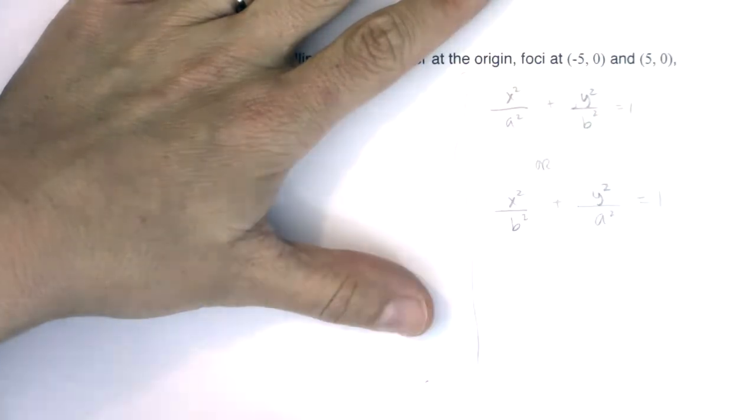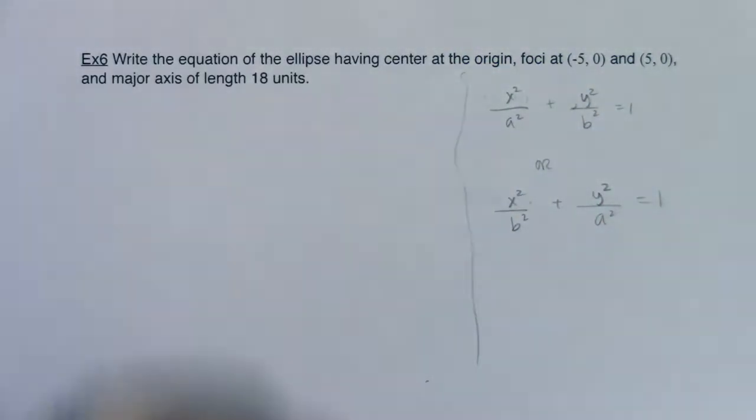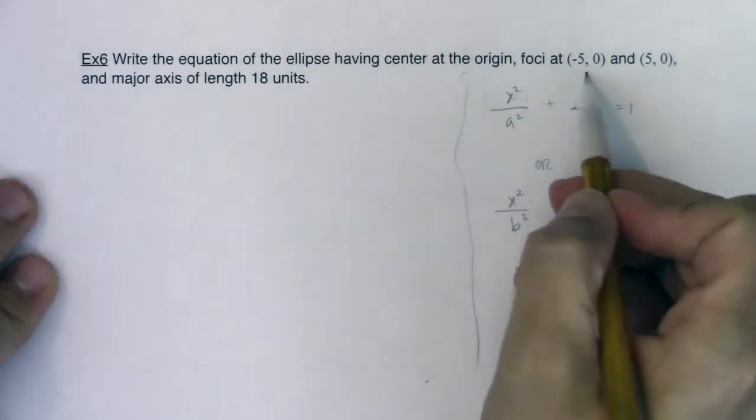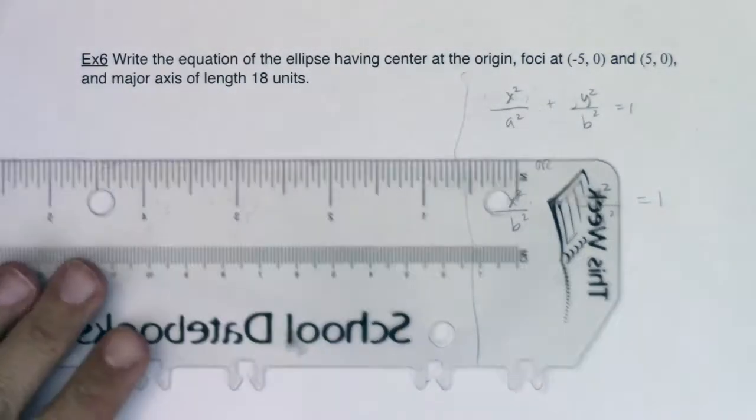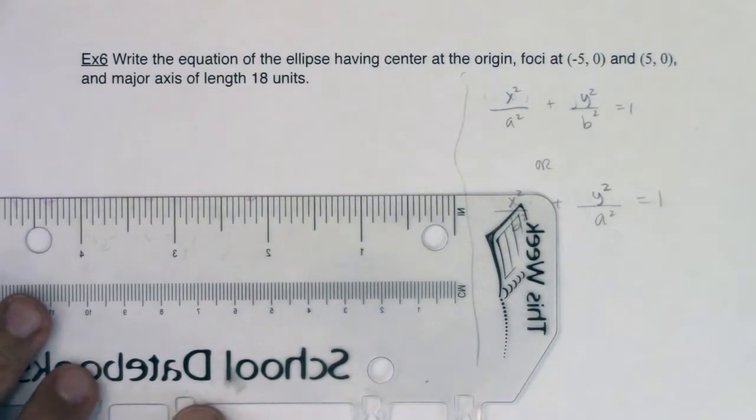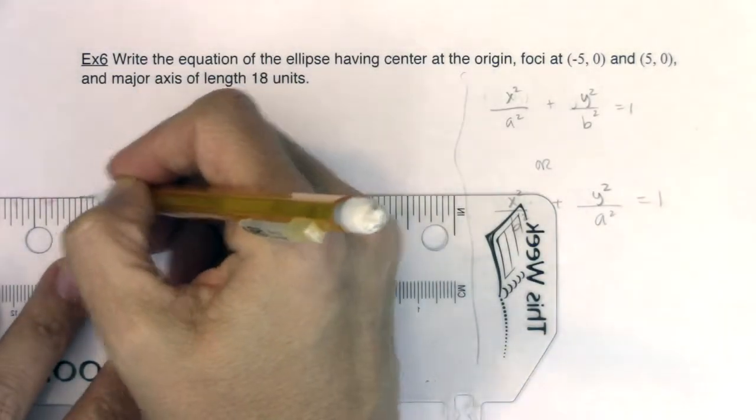Again, I still don't know where the a is falling. I don't know if the a is under the x variable or the y variable, but I'm about to find out. You have foci at (-5, 0) and (5, 0). So at this point, I'm just going to draw my own little x y axis and see what I can glean from that.